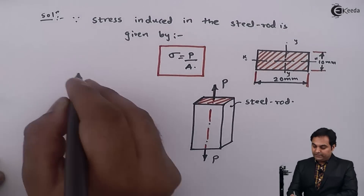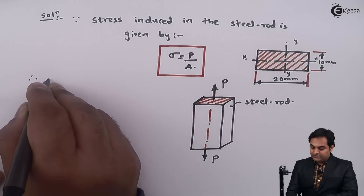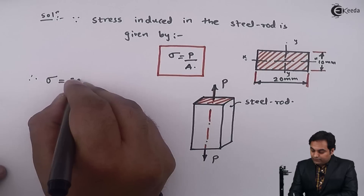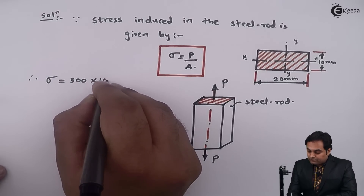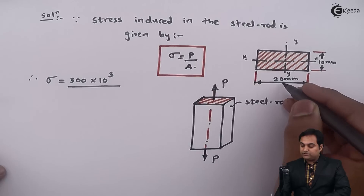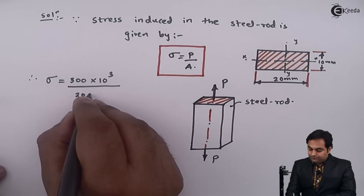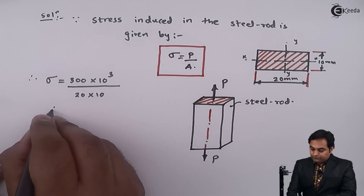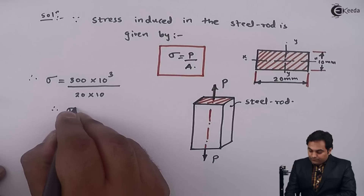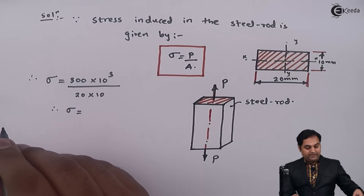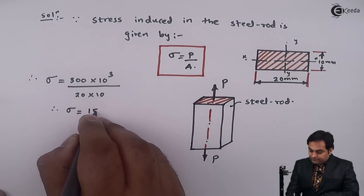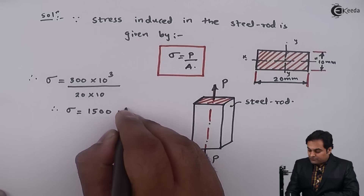Therefore, stress equals load divided by area: 300×10³ Newton divided by 20 × 10 mm². From this, the stress value comes out to be 1500 Newton per mm².